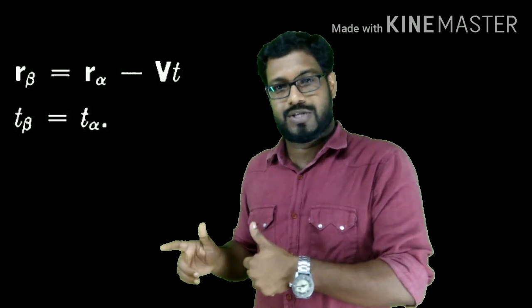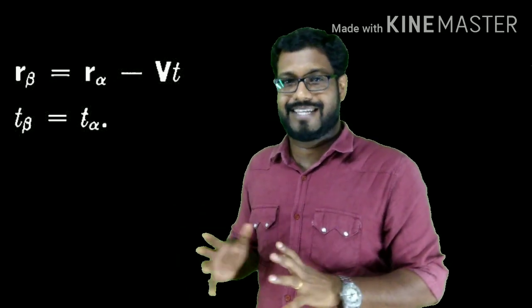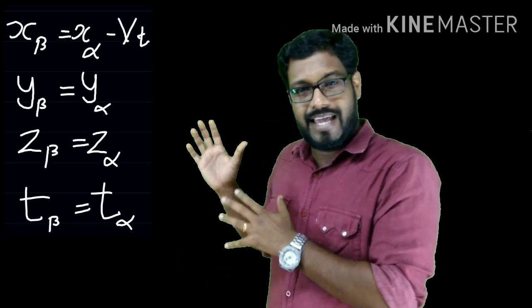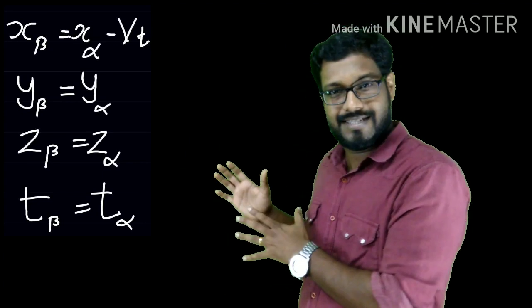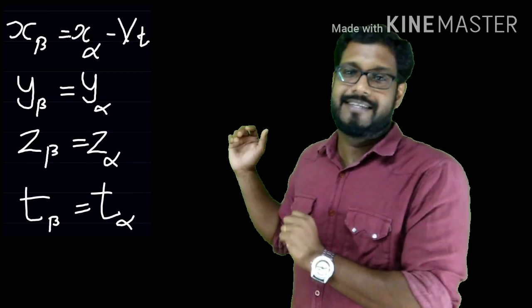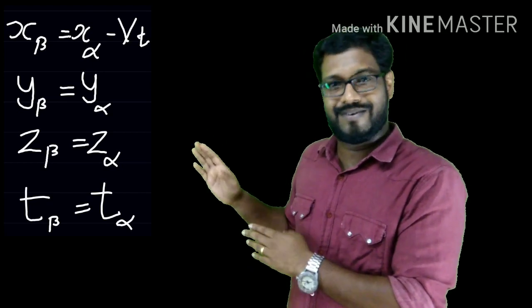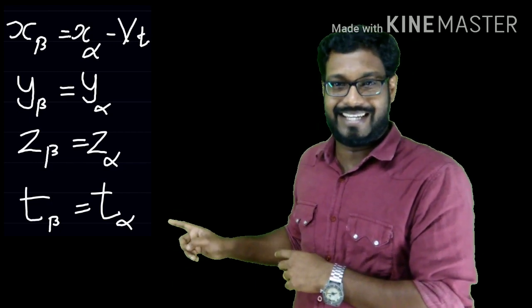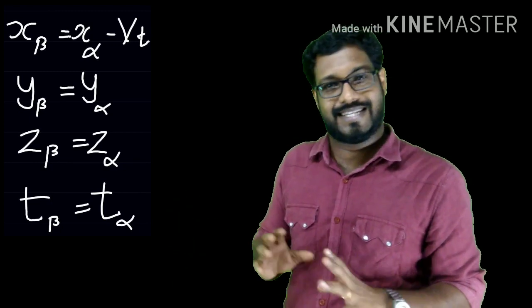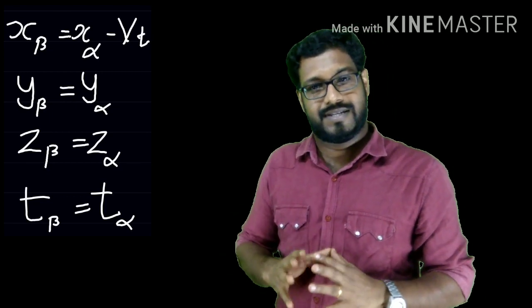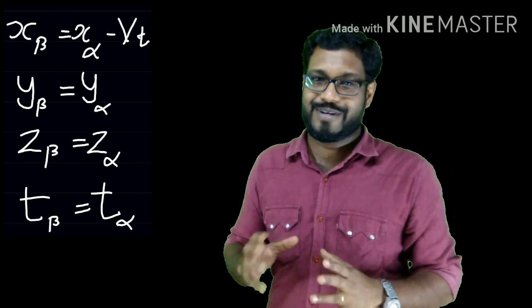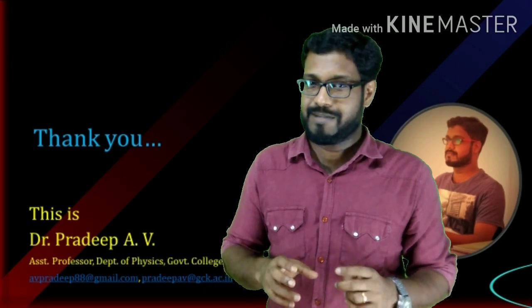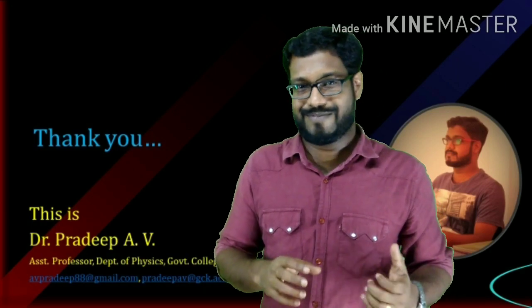If beta's frame of reference is moving only in the x direction with no motion in the y or z direction, we can rewrite these equations as: x_beta = x_alpha − vt, y_beta = y_alpha, z_beta = z_alpha, and t_beta = t_alpha, where x, y, z are the positional coordinates and t is the time coordinate. These Galilean transformation equations transform the coordinates of an event from one coordinate system to another. Thank you so much for watching this video. I'm Dr. Pradeep, your physics teacher. Please watch the next video.